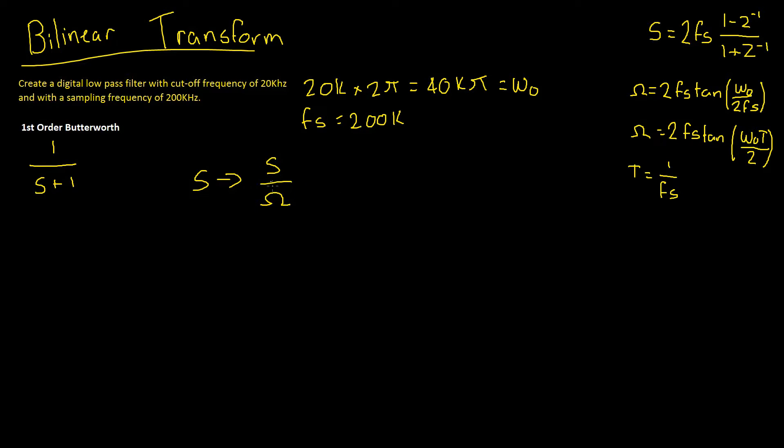Okay, so let's calculate S divided by omega, and then substitute that into S in our first-order Butterworth equation. Well, we know that S is equal to 2FS times 1 minus z to the power of negative 1, divided by 1 plus z to the power of negative 1.